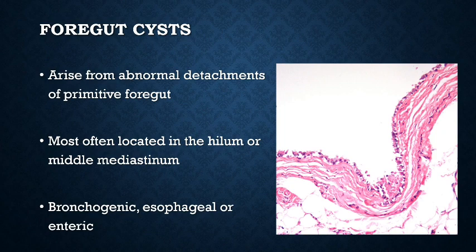Foregut cysts arise from abnormal detachments of the primitive foregut and are most often located in the hilum or middle mediastinum. Depending on the wall structure, these cysts are classified as bronchogenic, esophageal, or enteric. If it is lined by a respiratory epithelium, you call that your bronchogenic cyst. If it is lined by a squamous epithelium, you call that your esophageal cyst. If it is lined by a gastric epithelium, you call that your enteric cyst.